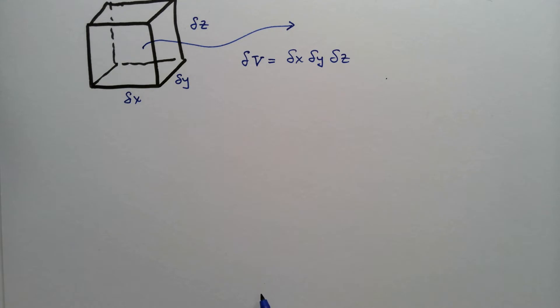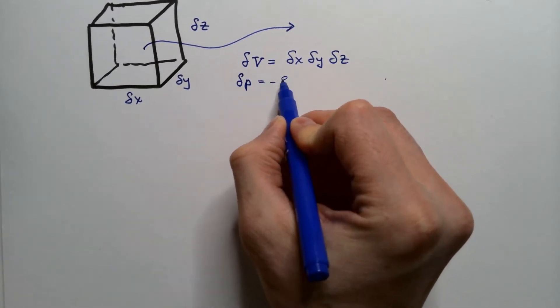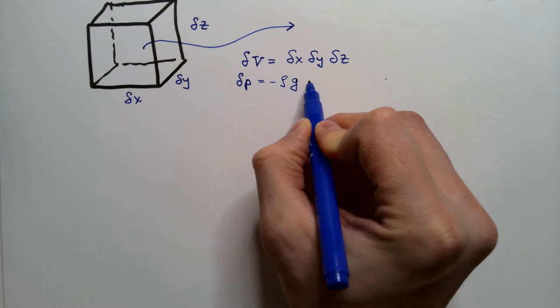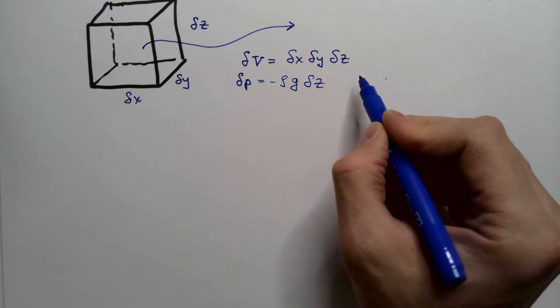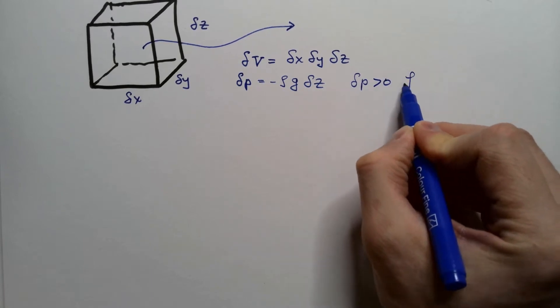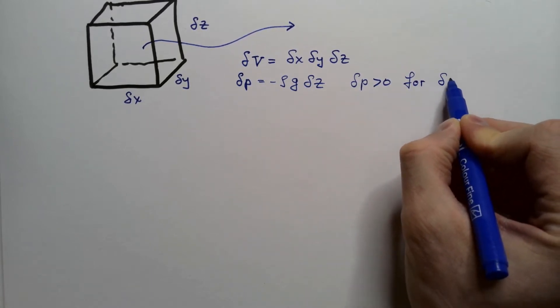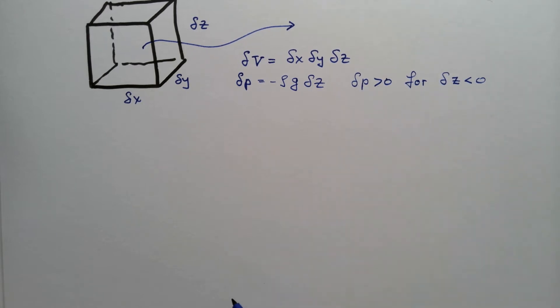But from the hydrostatic equation, we know that delta p is equal negative rho g delta z, where rho is air density and g is gravitational acceleration. And you have to always keep in mind that delta p is positive for delta z being negative. In other words, as we are approaching surface, delta z is negative, but pressure is increasing.